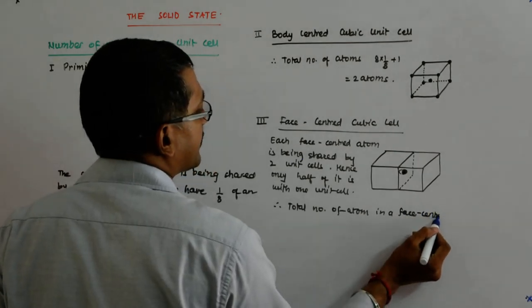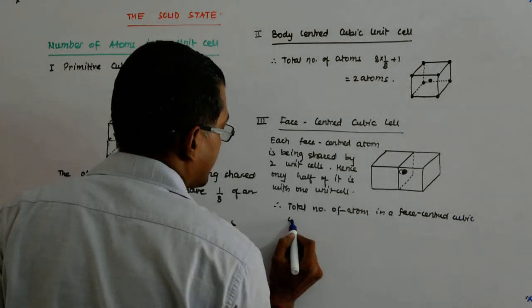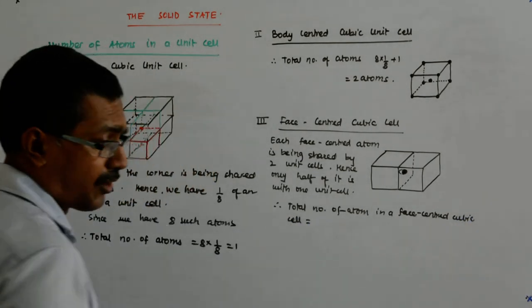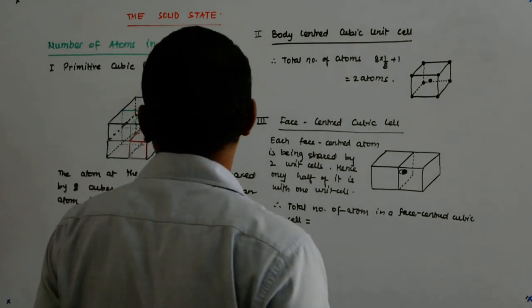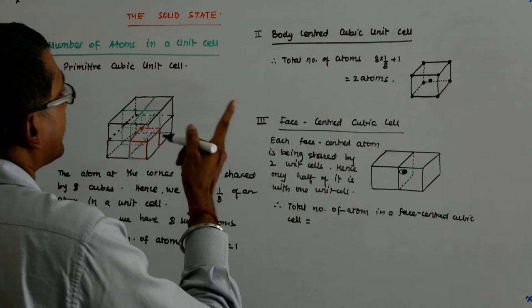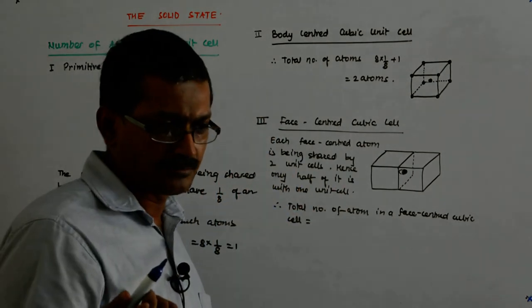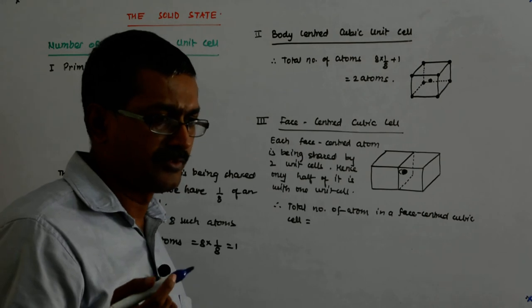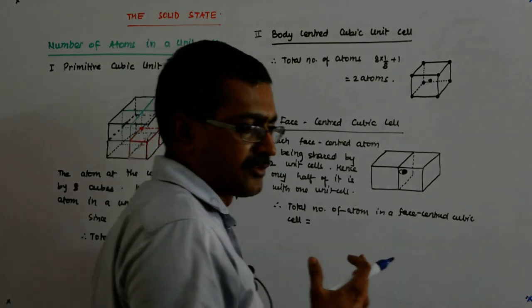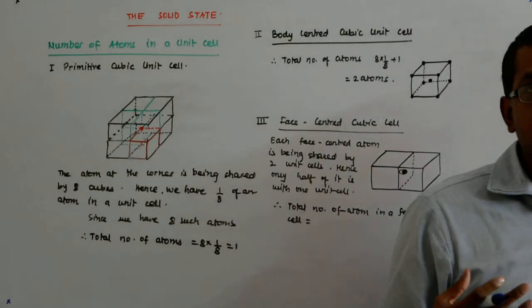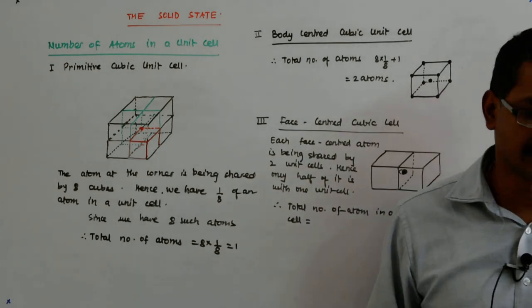We know that whenever we talk about a face-centered cubic cell, we say that it has atoms on the faces in addition to the atoms at the corners. So, don't lose sight of that, okay?